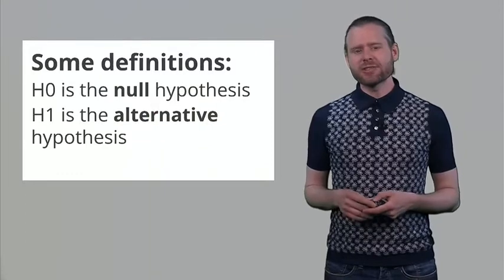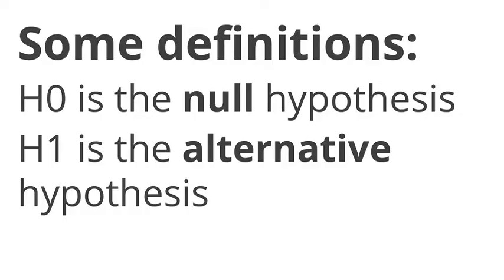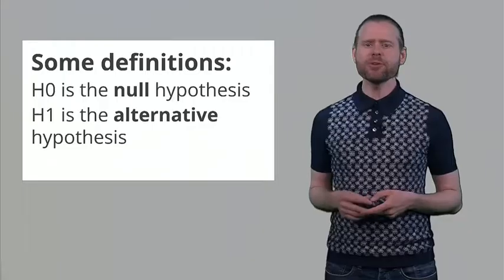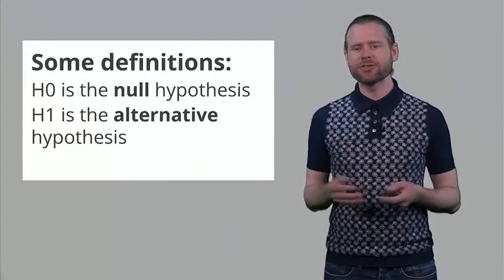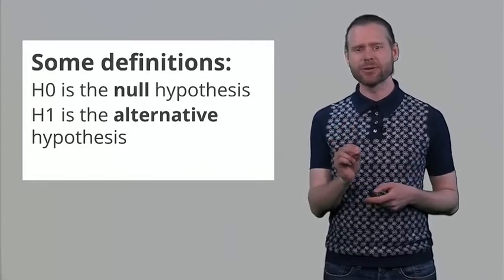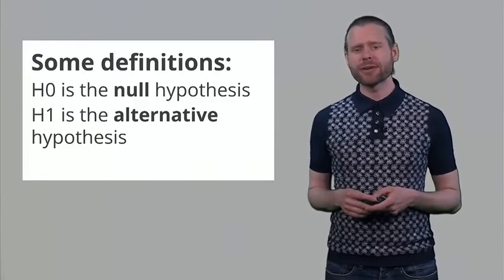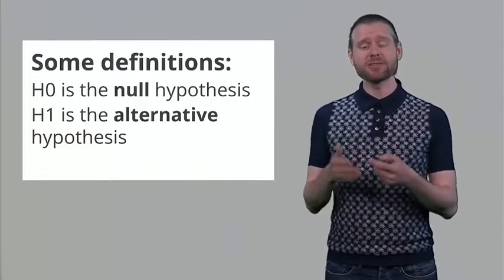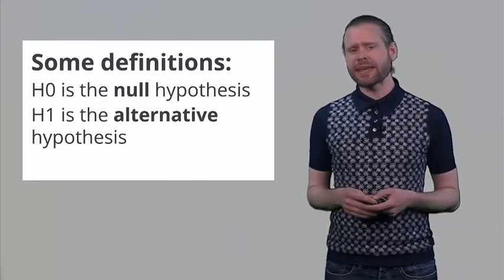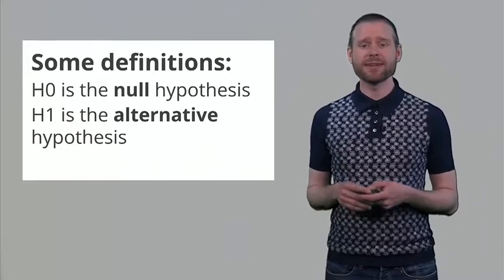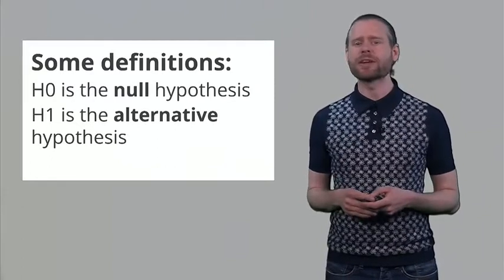Let's take a look at some definitions when we are talking about this topic. First we have to define the null hypothesis and the alternative hypothesis, which we will often indicate with H0 and H1. It is important to keep in mind that the null hypothesis doesn't necessarily need to be the prediction that the difference between certain conditions is exactly zero. Think about flipping a coin, in which case the null hypothesis is probably that there is a 50% probability of flipping heads and tails. So the null hypothesis can be anything, but very often it is the idea that there is no difference between two experimental conditions.